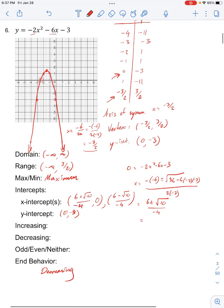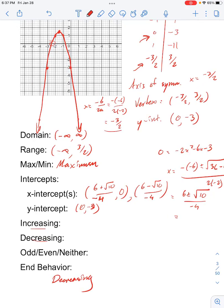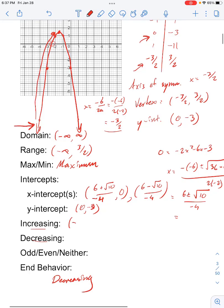And our end behavior, or if it's increasing or decreasing, so the function is increasing when we approach from negative infinity to this point at the vertex. So that's from negative infinity to negative 3 over 2. And it's decreasing after that vertex all the way on towards x is positive infinity.